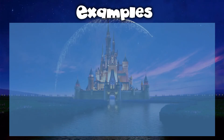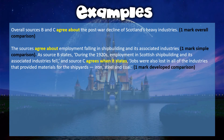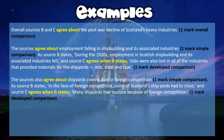Here is the answer. Step 1: 'Overall, sources B and C agree about the post-war decline of Scotland's heavy industries.' One mark. 'The sources agree about employment falling in shipbuilding and its associated industries.' As source B states: 'During the 1920s employment in Scottish shipbuilding and its associated industries fell,' and source C agrees when it states: 'Jobs were also lost in all the industries that provided materials for the shipyards — iron, steel and coal.' The sources also agree about shipyards closing due to foreign competition. As source B states: 'In the face of foreign competition some of Scotland's shipyards had to close,' and source C agrees when it states: 'Many shipyards had to close because of foreign competition.'